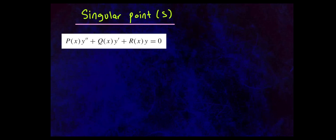We started with singular points of second order differential equations with function coefficients, homogeneous. The form is: p of x times y double prime, plus q of x times y prime, plus r of x times y, set equal to 0.